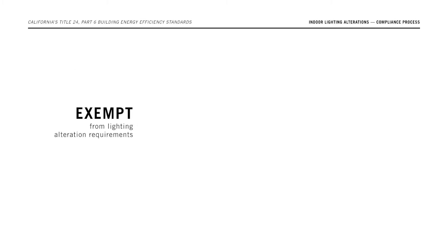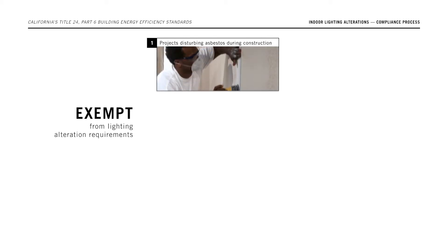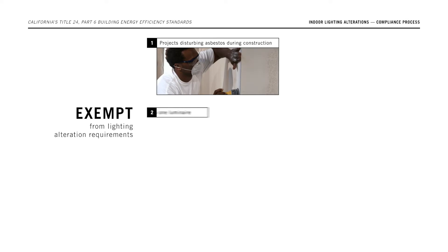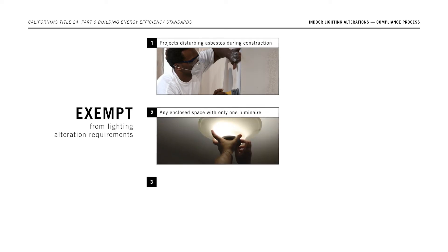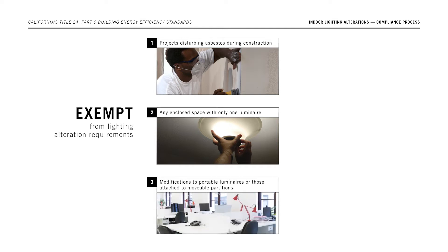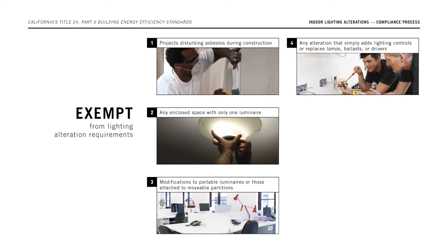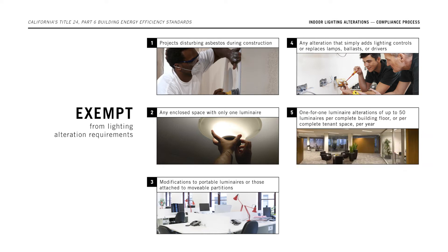Some projects are exempt from the lighting alteration requirements. These include projects that could disturb asbestos during construction; any enclosed space with only one luminaire; modifications to portable luminaires or those attached to movable partitions; any alteration that only adds lighting controls or replaces lamps, ballasts, or drivers; and one-for-one luminaire alterations of up to 50 luminaires per year per complete building floor or tenant space. Additionally, healthcare facilities using Option 2 or Option 3 are exempt from the shutoff control requirements.